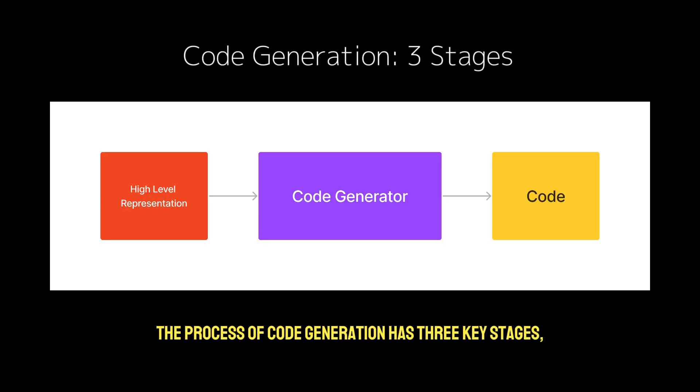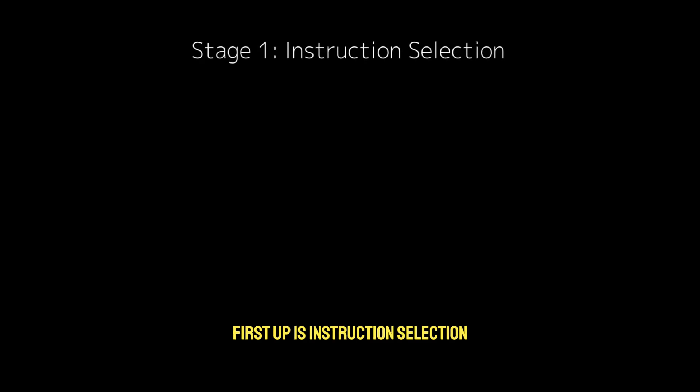The process of code generation has three key stages, each with specific goals and technical challenges. First up is instruction selection.